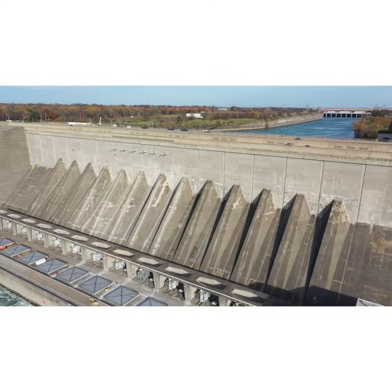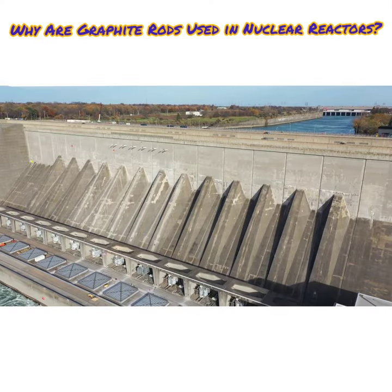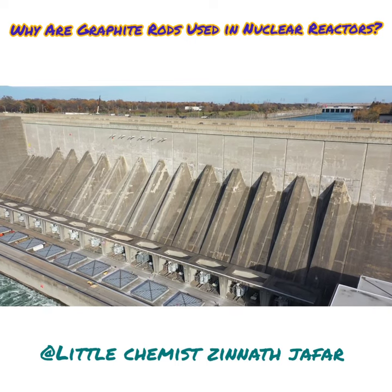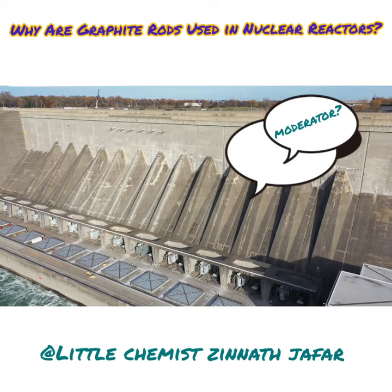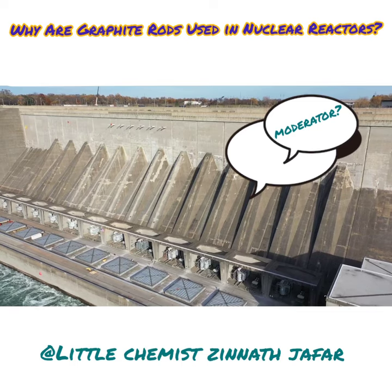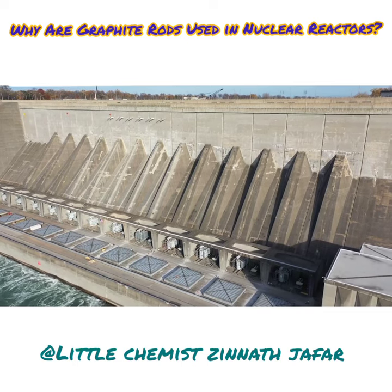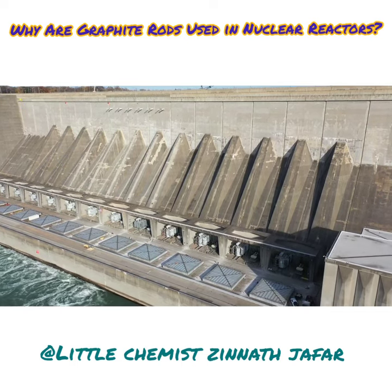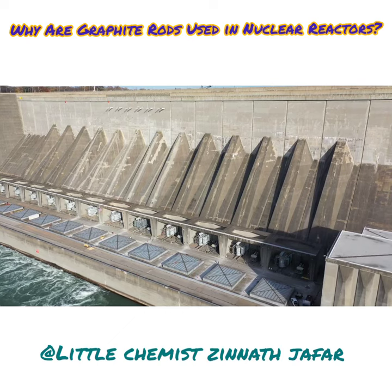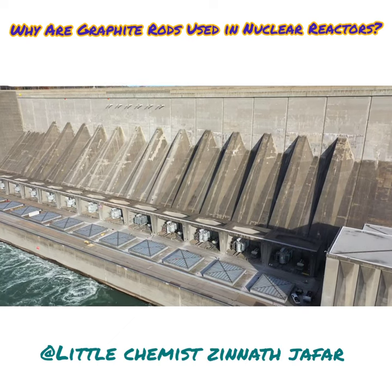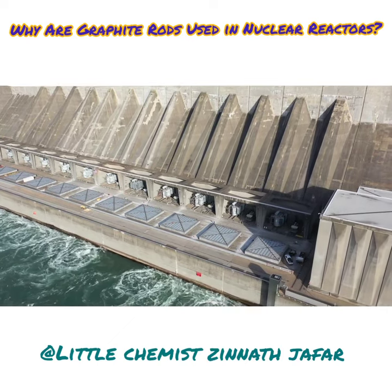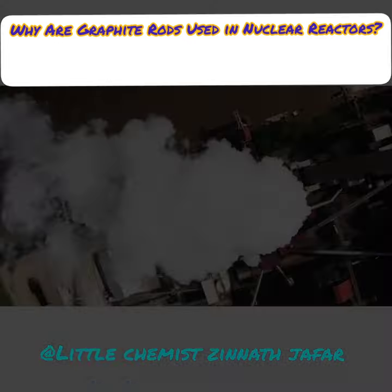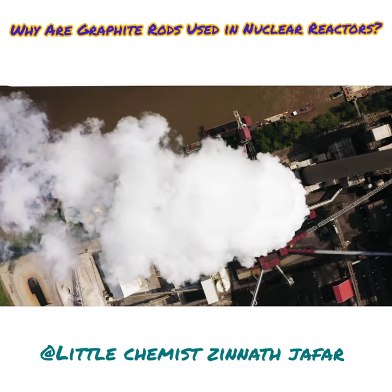Why are graphite rods used in nuclear reactors? Graphite is used in nuclear reactors as a moderator. Basically, a nuclear moderator decreases the speed of neutron release, allowing us to control the nuclear chain reaction. And carbon atoms in graphite can absorb the high kinetic energy that neutrons have when emitted in a fission process.